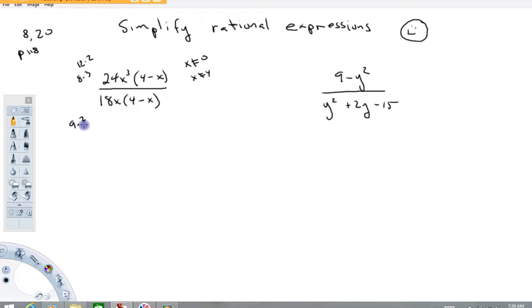Now you'll notice both the top and the bottom are divisible by 2. So what I'm going to do is divide this guy by 2, this guy by 2, and rewrite my rational expression. So dividing this by 2 we would have 12x³(4 - x) over, dividing this guy by 2, we'd have 9 times x times (4 - x).